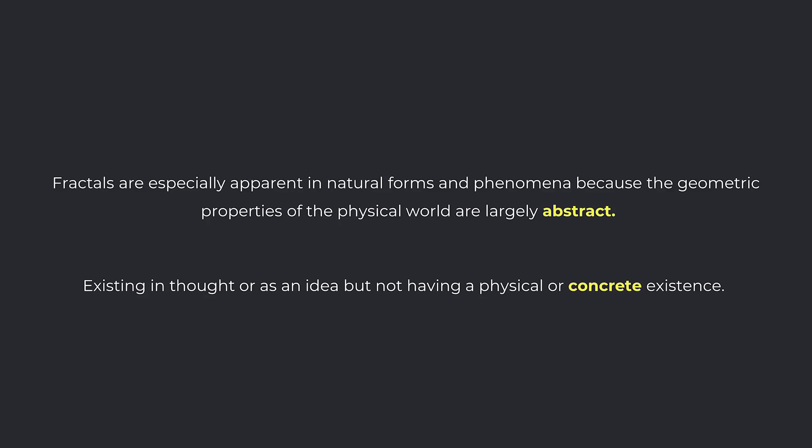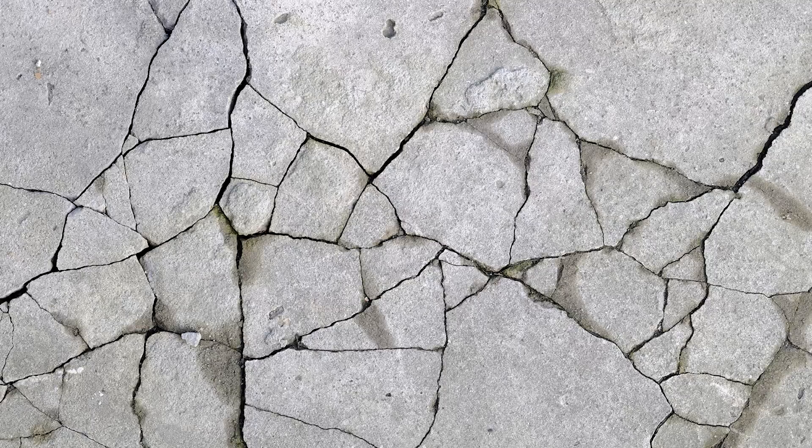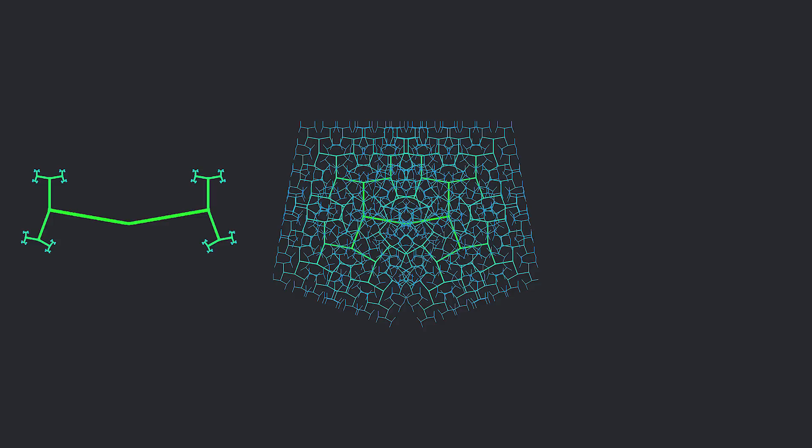The definition goes on to say that fractals are especially apparent in natural forms and phenomena because the geometric properties of the physical world are largely abstract. The definition of abstract is: existing in thought or as an idea, but not having a physical or concrete existence. Fractals can only exist and grow under a very particular growth rate — too small and they'll peter out, too great and they'll crowd each other out and stop. There's only one growth rate that will allow any fractal to go on forever. That growth rate is phi.